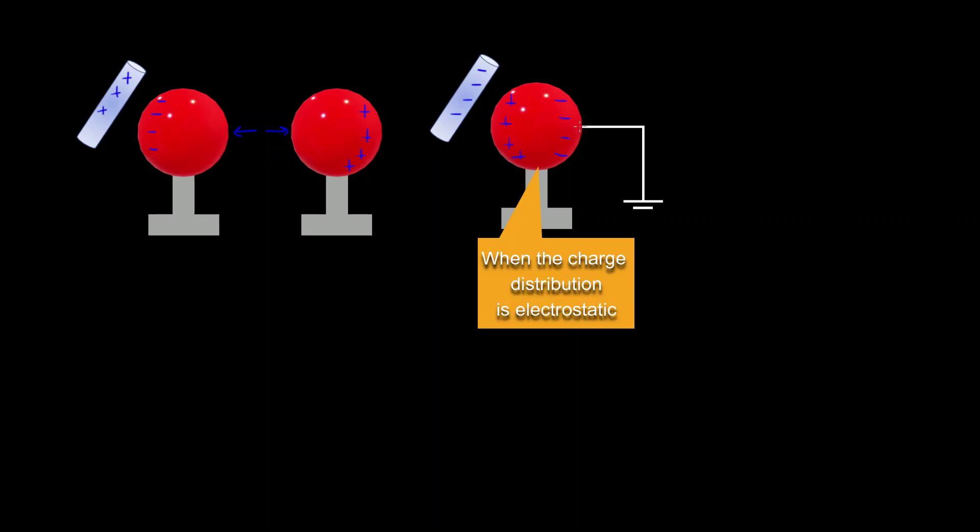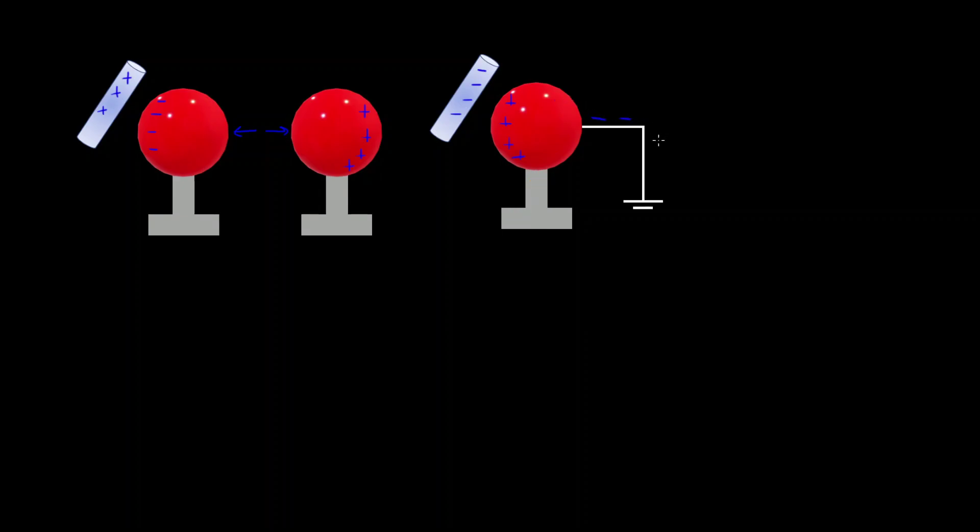And now suppose we've attached this wire to the conductor so there's a path for these electrons to get even further away from those electrons in the rod. And now if we cut this wire and then remove this rod, the electrons have no way to get back. Therefore this conductor is going to be positively charged. That's what we call charge by induction.